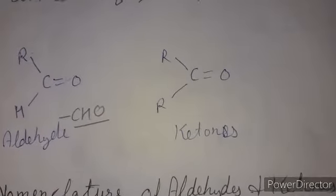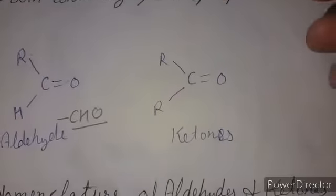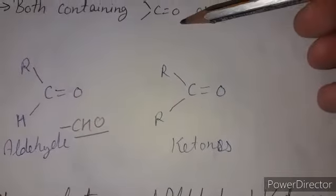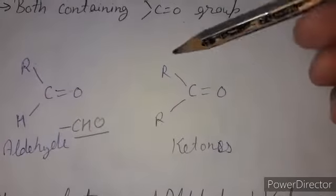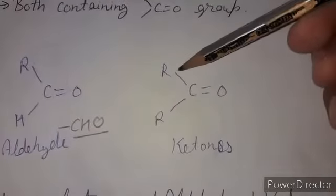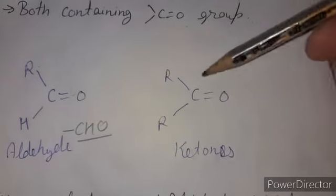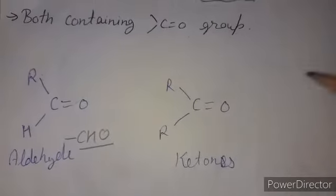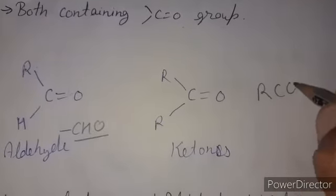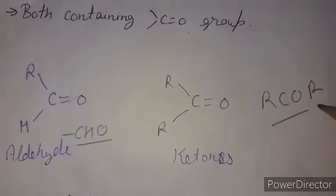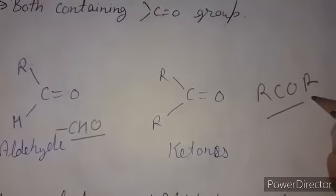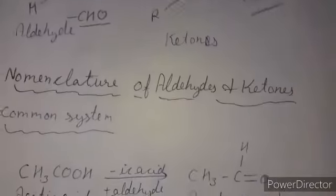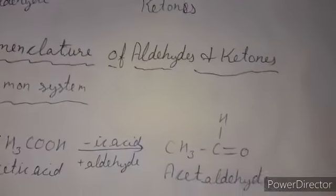If we attach alkyl groups on both sides of the carbonyl group it is called a ketone. We never attach the carbonyl carbon to a hydrogen atom in a ketone, otherwise it changes into an aldehyde. It is written as R-CO-R, where R may be the same or different alkyl groups.